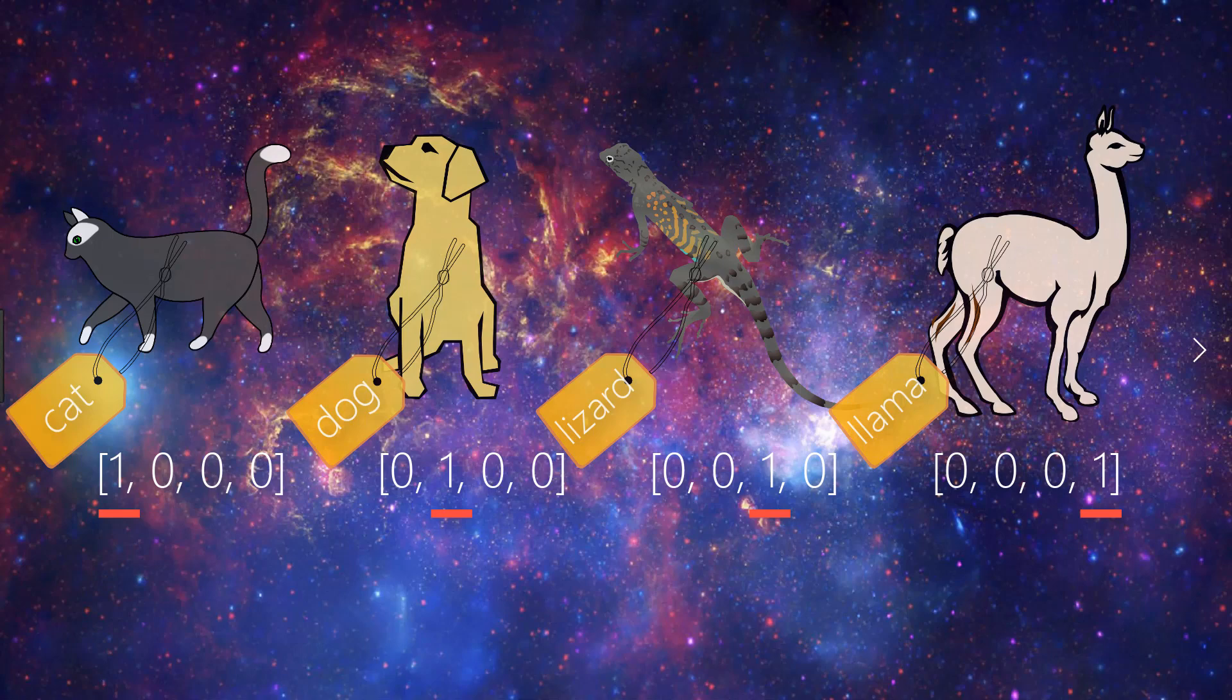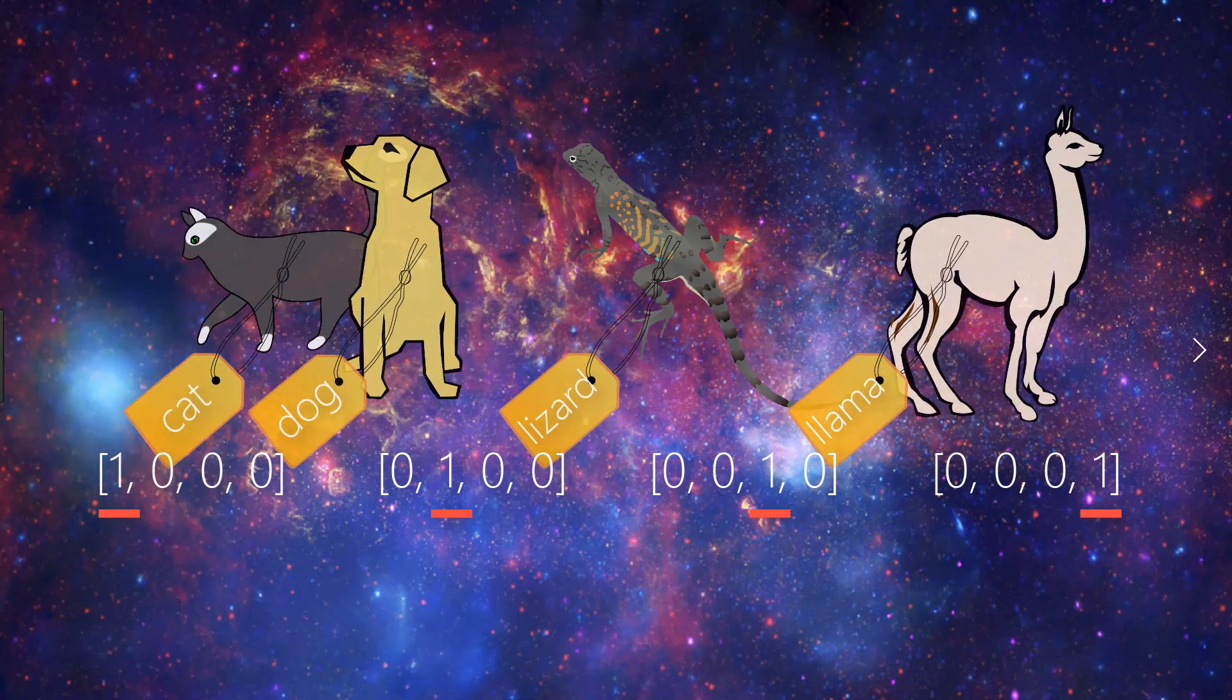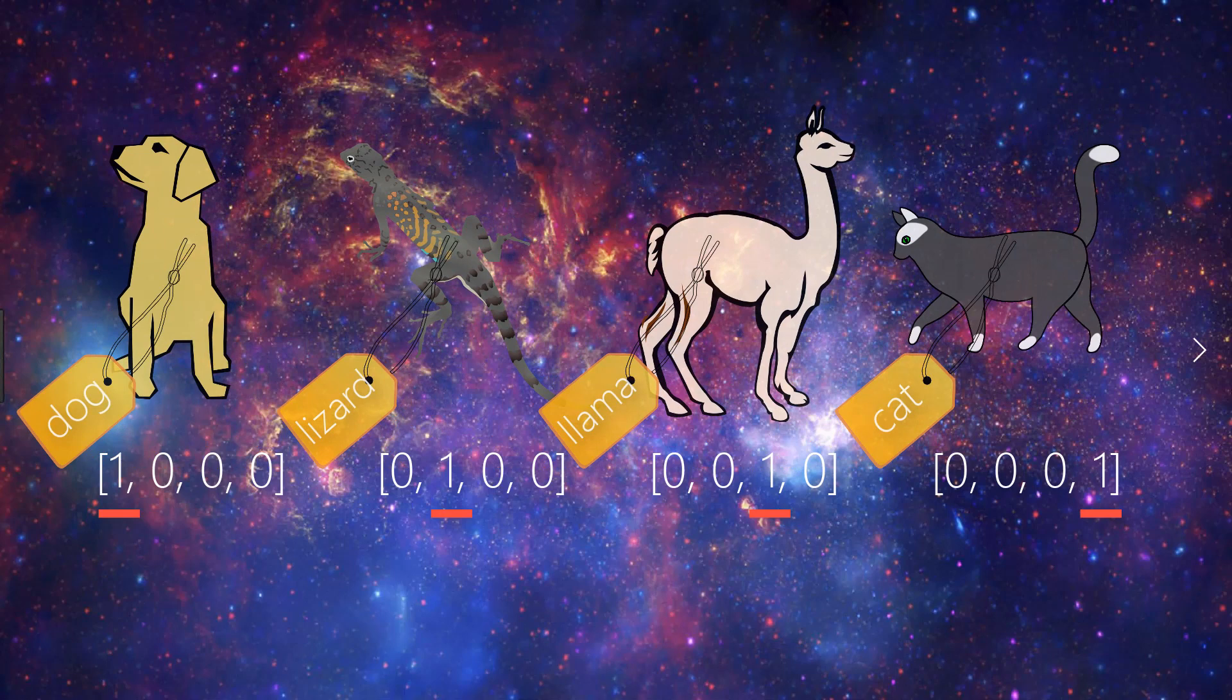For example, we could instead have dog corresponding to the first element, lizard to the second, llama to the third, and cat to the fourth. This just depends on how the underlying code or library is doing the one hot encoding. If you're interested in understanding how to view the mapping between which element or index corresponds to which label in Keras for image data, check out my previous video showing how that can be accessed.